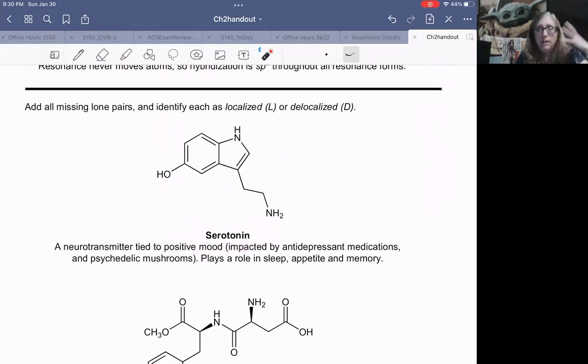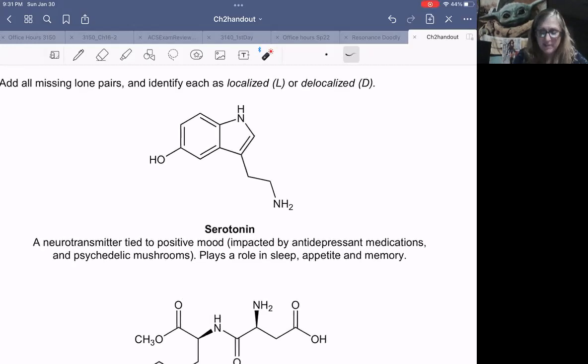This molecule is serotonin. Serotonin is a naturally occurring neurotransmitter that we have in our brain. When you have good levels of serotonin, that's when you're in a good mood and life is good. It's super important for regulating your sleep, your appetite. It has a role in memory and a host of other things. Many antidepressant medications work by boosting the level of serotonin in your body.